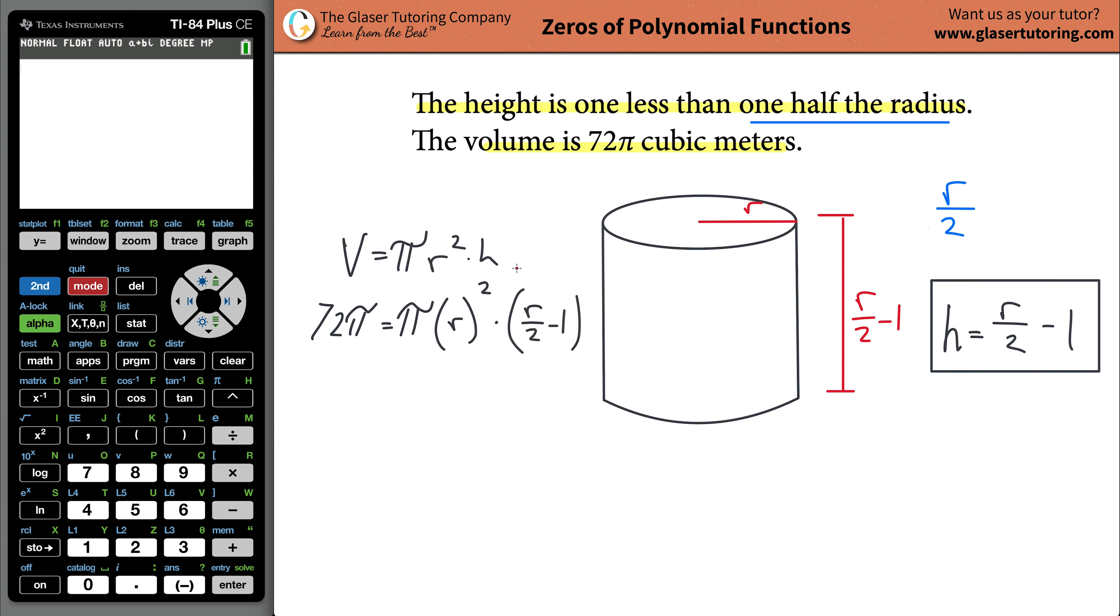Now you can simplify this a little bit. Get rid of the π's, not the two. So it's going to be equal to 72 times now R squared times R over two minus one. And now from here what you can do is you can use a couple of mathematical techniques, and it's going to take you a while to get this problem done. Instead, we're going to use a calculator.